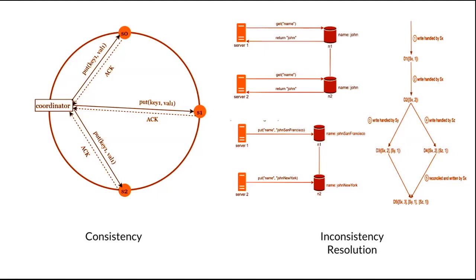A vector clock is represented as D([S1,V1],[S2,V2],...) where D is the data item, S is the server, and V is the version. When data item D is written to server S1, the system must either increment version V1 if an entry for S1 already exists, or create a new entry for S1 otherwise. So if the version for that server exists, increment it; if it's a new server, introduce a new entry such as [S1,1] for the first version.